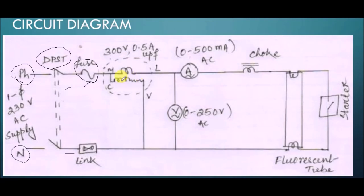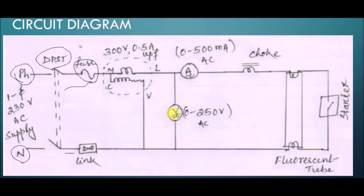Then we have the wattmeter. When you are going to install a fluorescent tube in your home you do not need to use a wattmeter, ammeter, or voltmeter because these are indicating devices — meters used in the lab. We just want to find the voltage, current, and power inside the lab. That is why we are doing this experiment. But when installing a fluorescent tube at home, no need to use any meters.